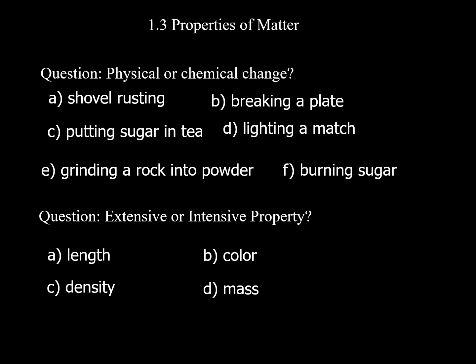Extensive or intensive property: length and mass are extensive properties — their values change when you add different amounts. Color and density are intensive properties. If you have a piece of white paper, whether you have a lot or a little, it's still white. And the density of that paper remains the same regardless of whether you have a lot or a little.